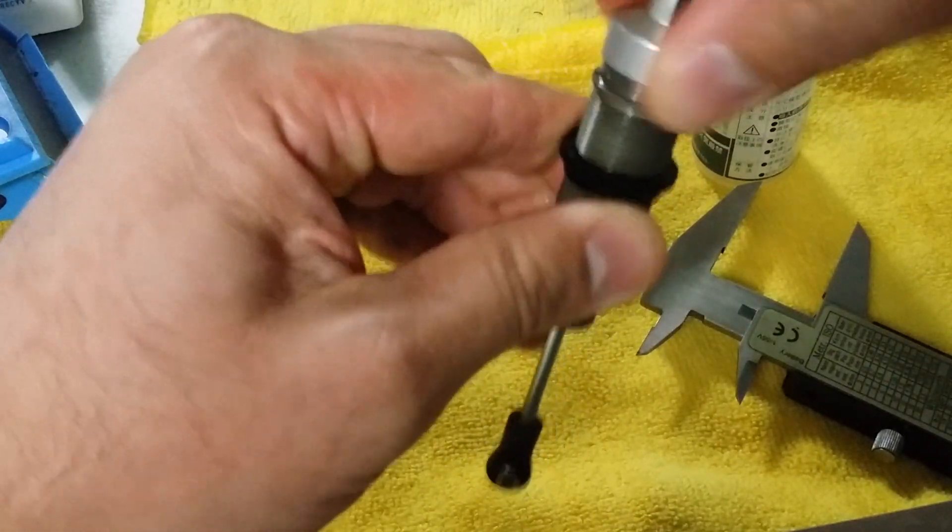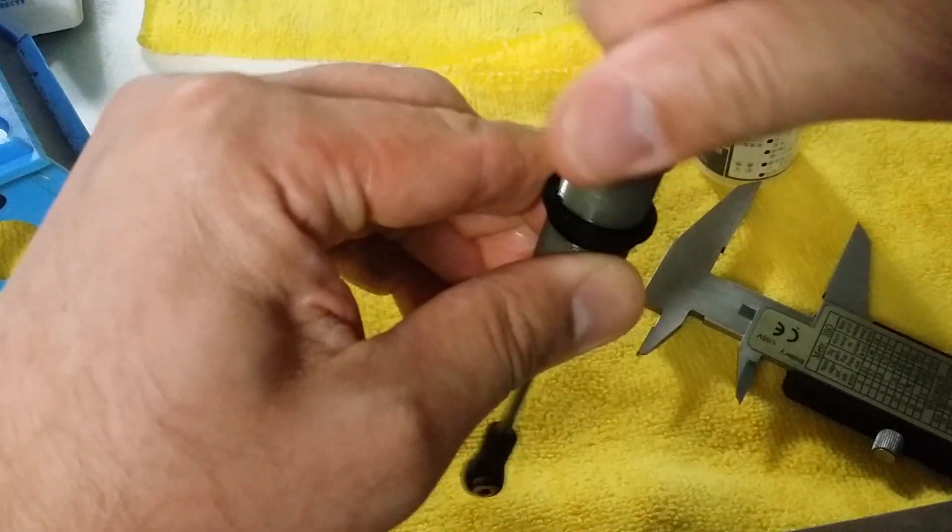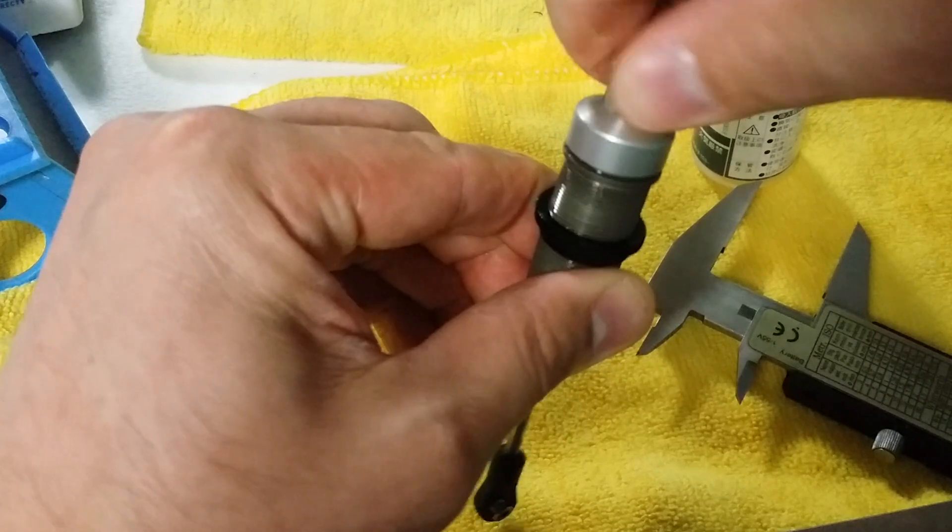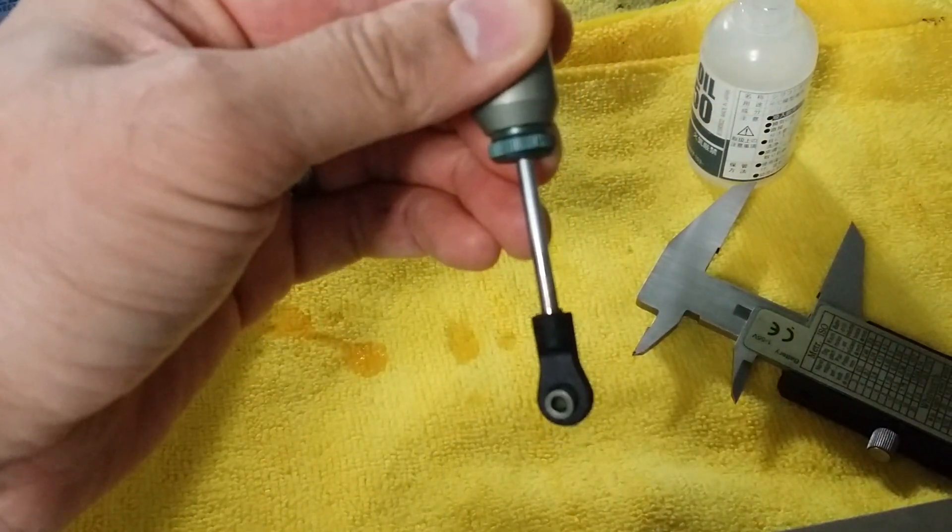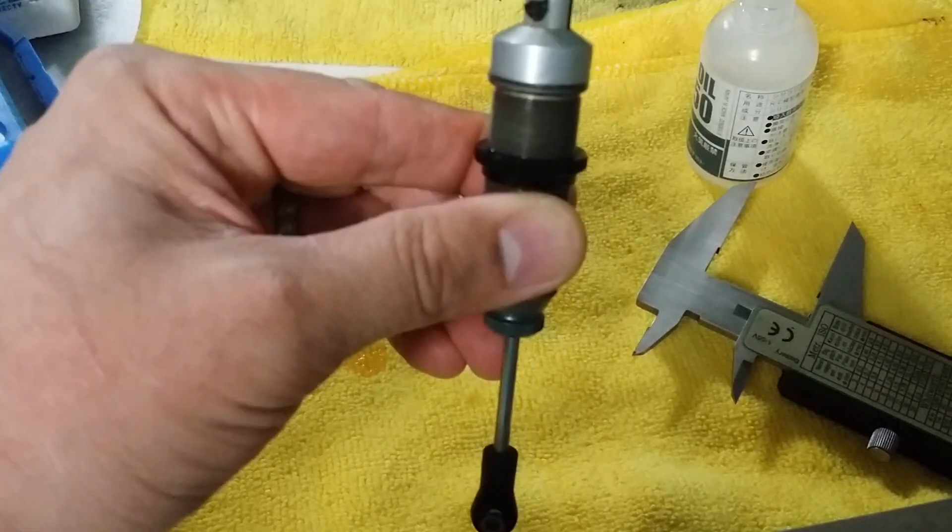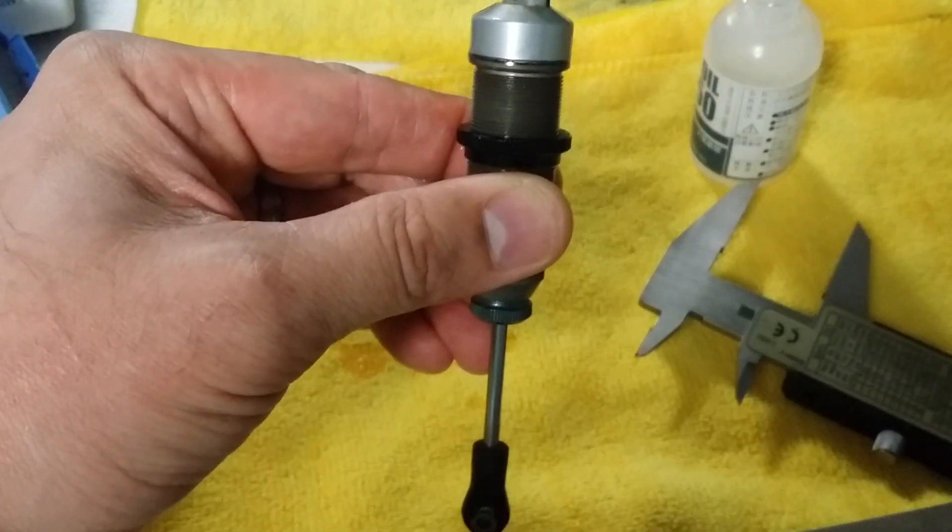Put your cap back on. Now you have your rebound at 35 millimeters. Hopefully this helps you guys. Thanks for watching.